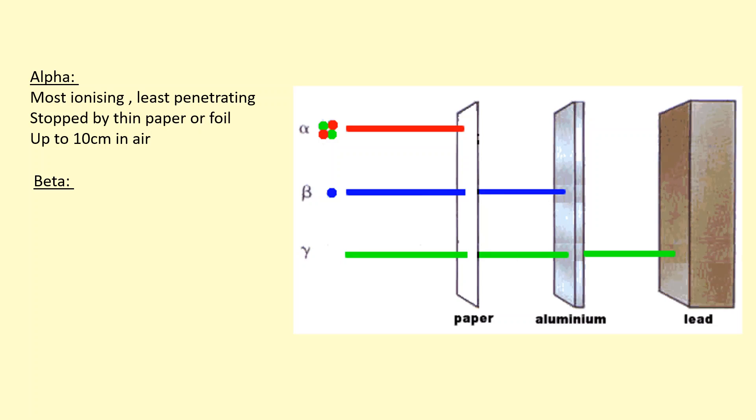Followed by that, we've got beta, beta plus or beta minus, which gets stopped by 5 millimeters of aluminum. And in air, it can go up to 1 meter maximum.